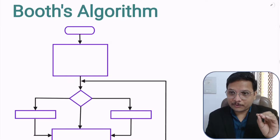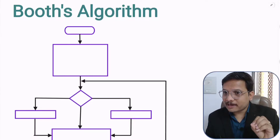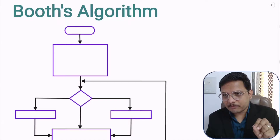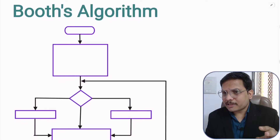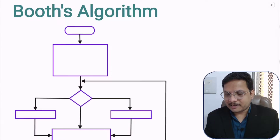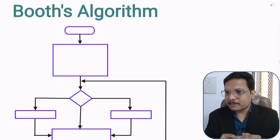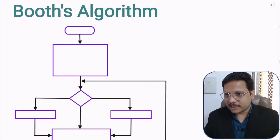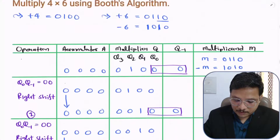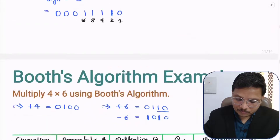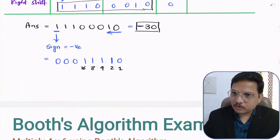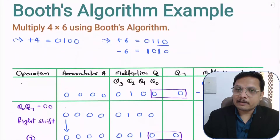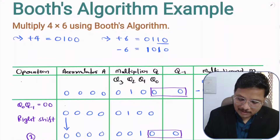Before you learn how to draw the flowchart and how to make the circuit of Booth's algorithm, you should practice one or two examples at least. Based on that, you can easily make the flowchart and circuit. I wish you will watch those two videos first, and once you see that, you can easily make the flowchart.